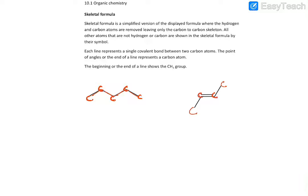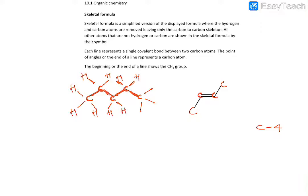Everything else should be filled with hydrogen. Based on the number of bonds that carbon should form — carbon should form four bonds — you can count the existing bonds and fill in the remaining ones with hydrogen. Like this, from the skeletal formula you can get the full displayed formula.